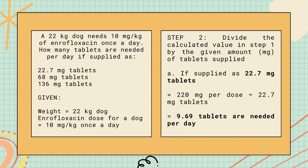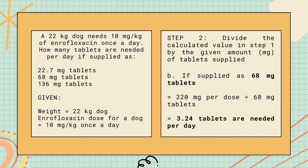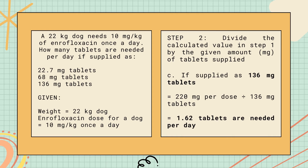Step 2: divide the calculated value in step 1 by the given amount in milligrams of tablets supplied. If supplied as 22.7 mg tablets: 220 mg/dose divided by 22.7 mg/tablet equals 9.69 tablets. If supplied as 68 mg tablets: 220 mg/dose divided by 68 mg/tablet equals 3.24 tablets. If supplied as 136 mg tablets: 220 mg/dose divided by 136 mg/tablet equals 1.62 tablets.